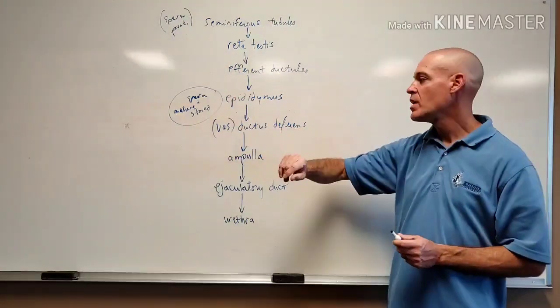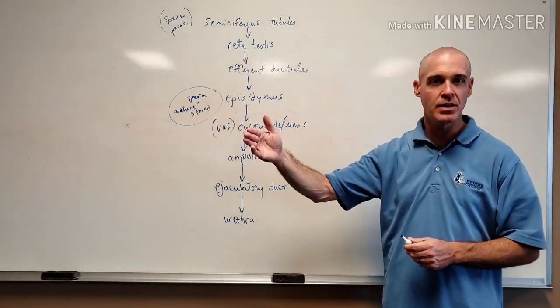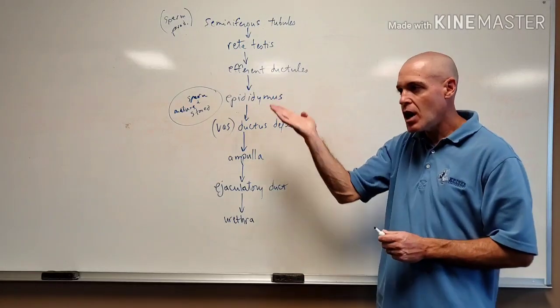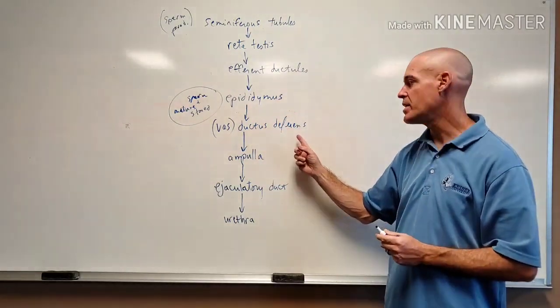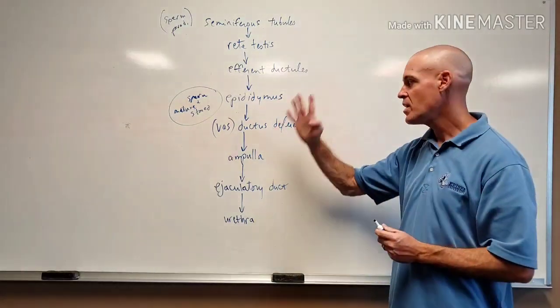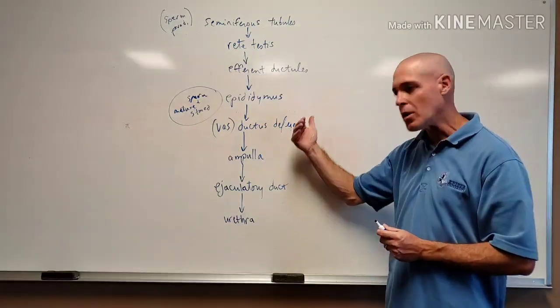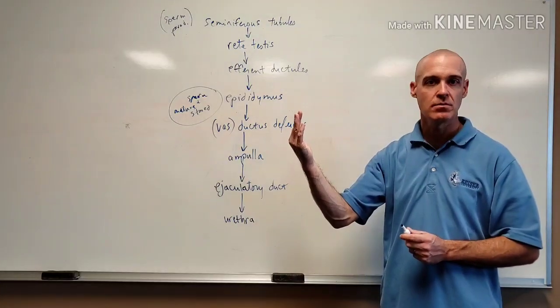That's the old term. And of course, when a man gets a vasectomy, they're cutting and cauterizing the vas deferens or ductus deferens. And because this is the tube that leads away from the testes, if this is cut, sperm can no longer leave away from the testes.